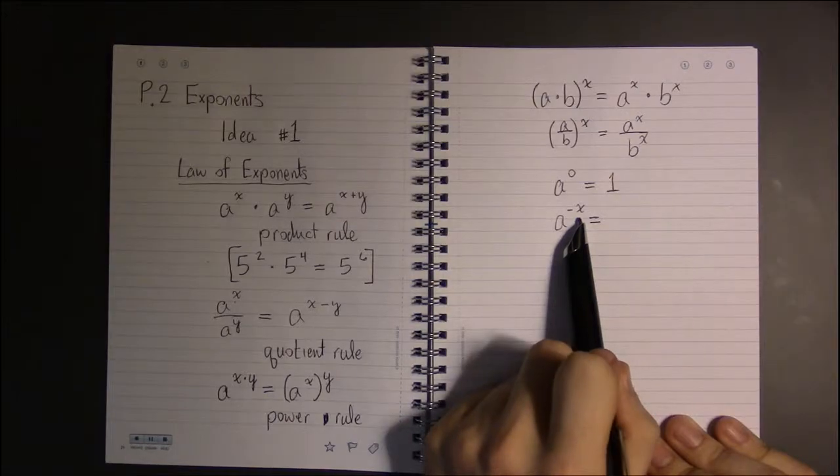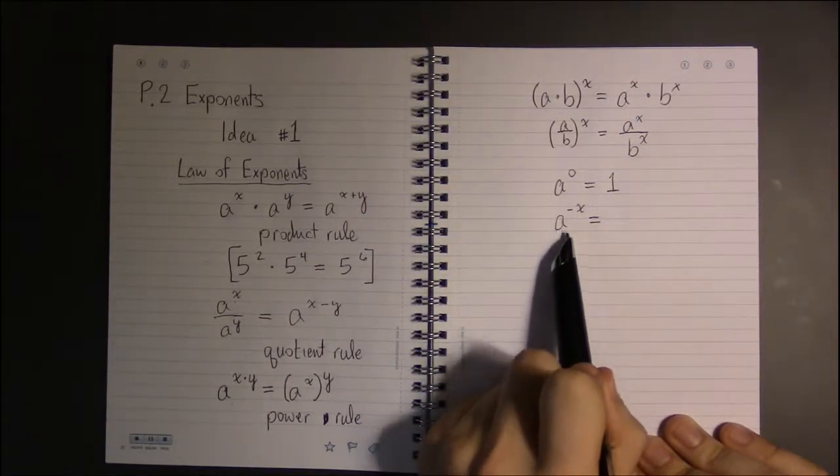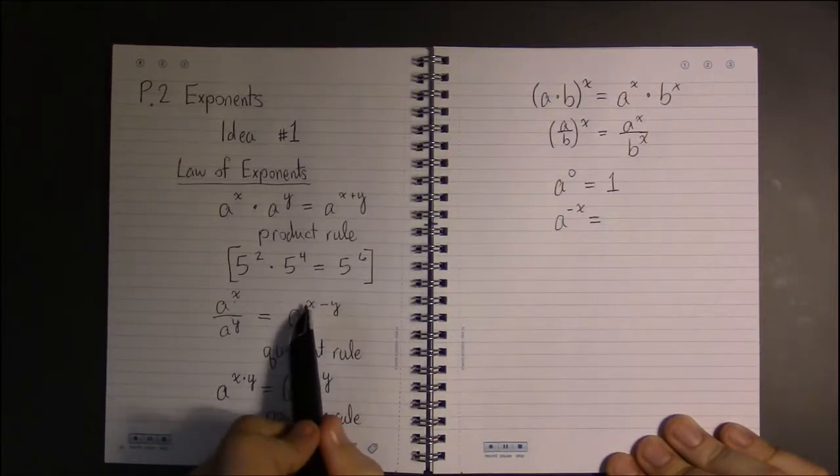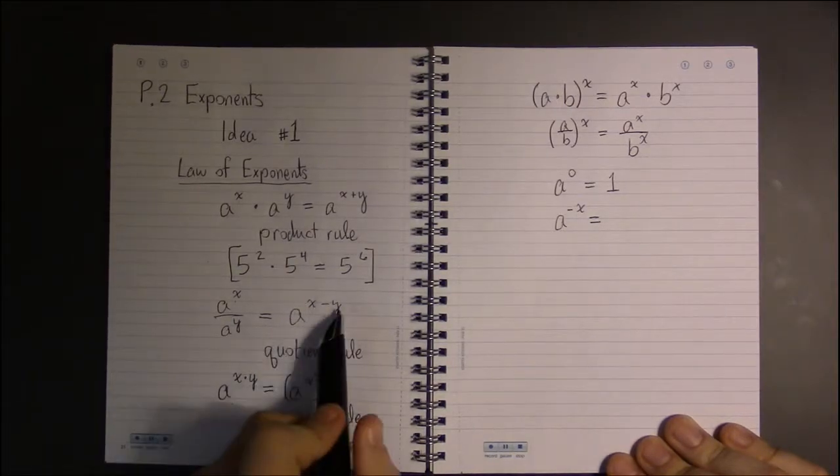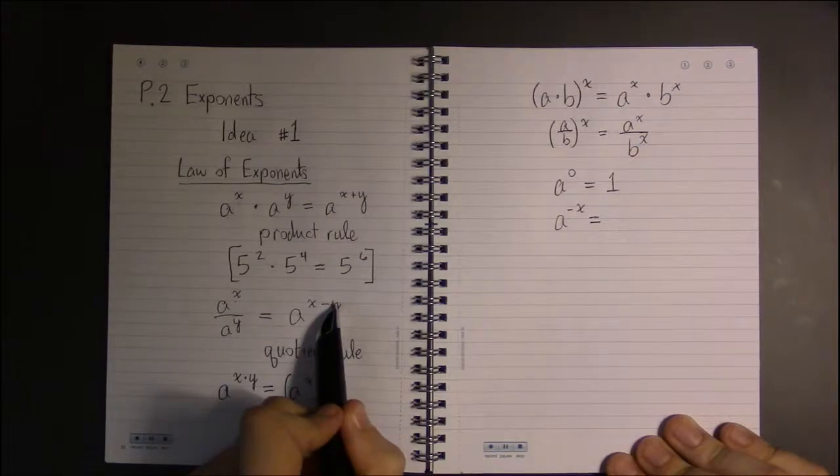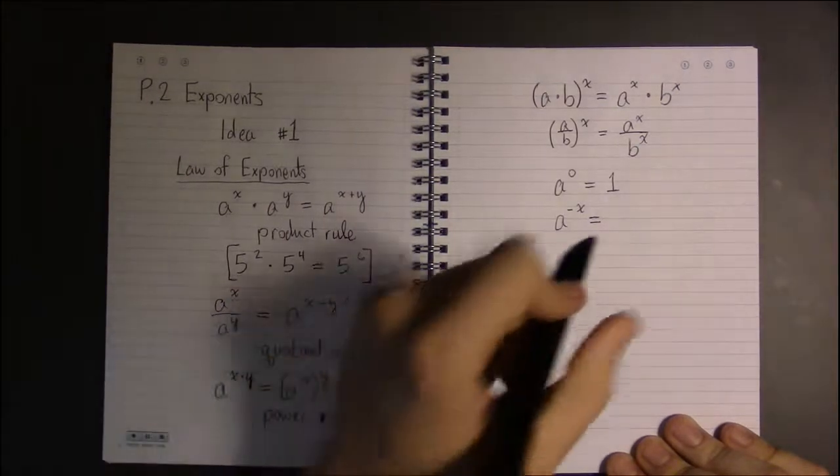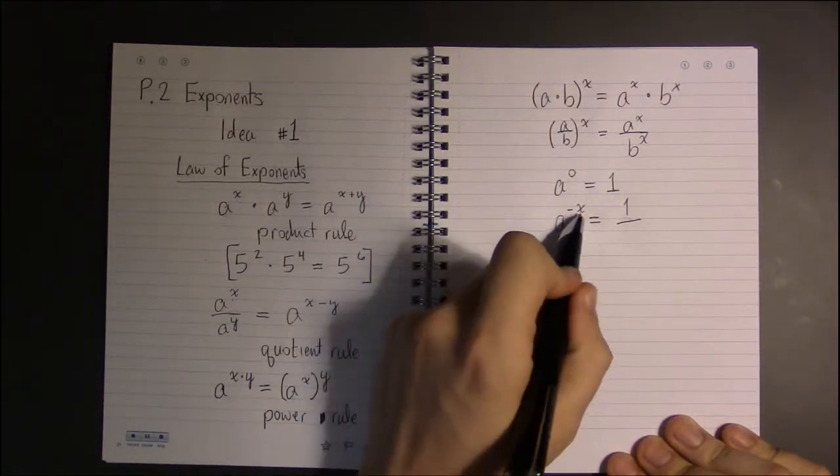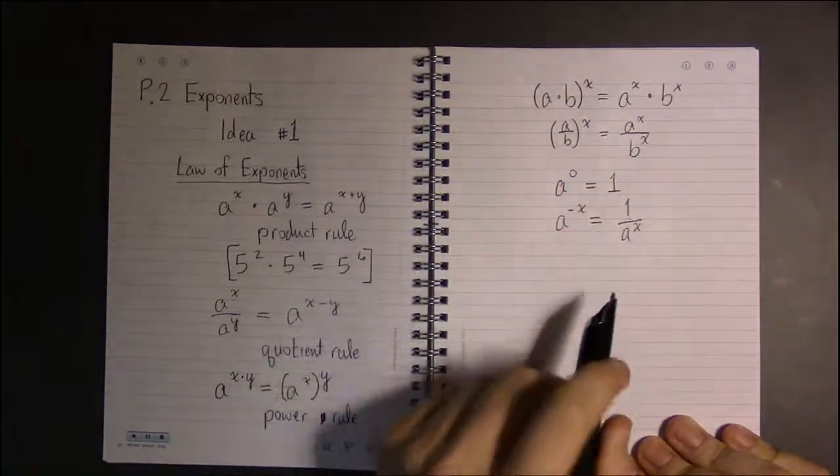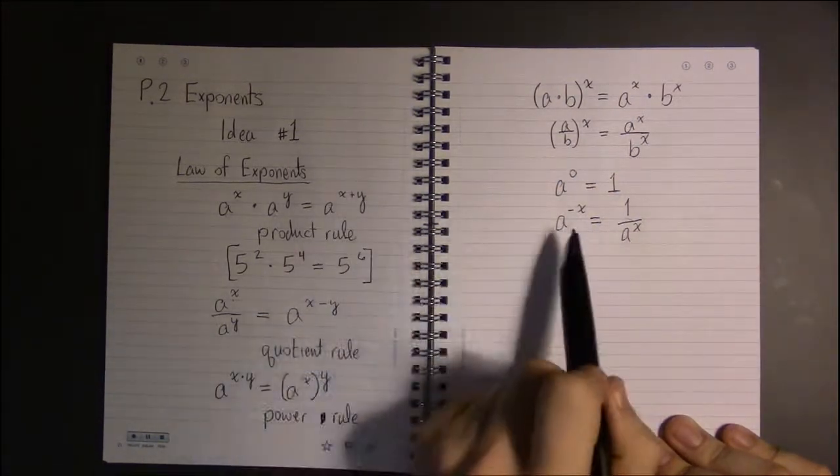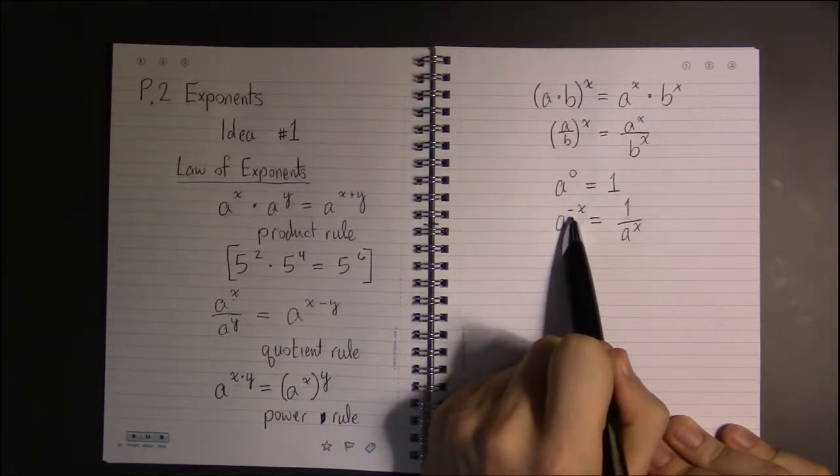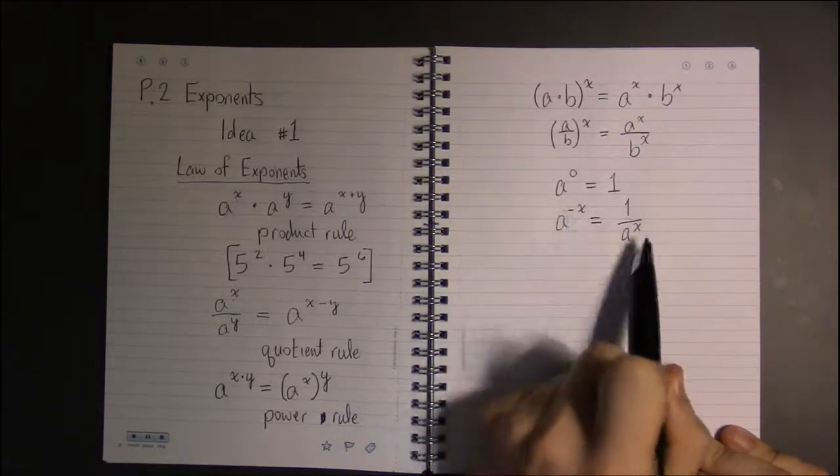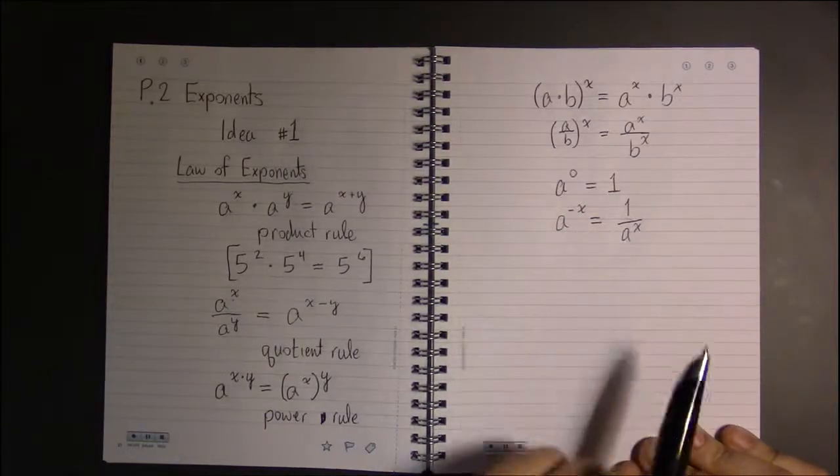This a to the minus x, getting a bit out of order here but that's alright. A to the minus x, just go back to the quotient rule here. That's like having zero in the first place and for y in the second place having x. So this is just a to the zero, or one, divided by a to the x. So this is what I was talking about in the previous video, that if you have a negative exponent, what you do is you just end up dropping that exponent, dropping this whole thing into the denominator and changing the sign of the exponent.